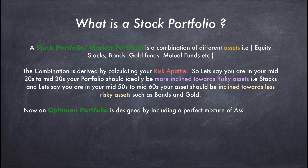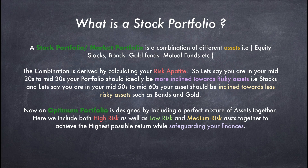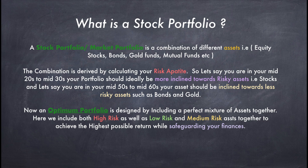A stock portfolio or a market portfolio is a combination of different assets such as equity stocks, bonds, gold, funds, mutual funds, etc. The combination is derived by calculating your risk appetite. If you are in your mid-20s to mid-30s, your portfolio should ideally be more inclined towards risky assets such as stocks. If you are in your mid-50s to mid-60s, your assets should be inclined towards less risky assets such as bonds and gold. An optimum portfolio includes both high risk, low risk, and medium risk assets together to achieve the highest possible return while safeguarding your finances.